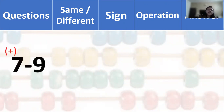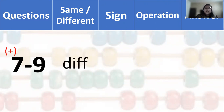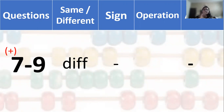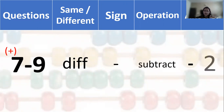Next question: 7 minus 9. 7 is positive, that means it is plus. Different sign. Different sign — the operation is difference. 7 and 9 — 9 is greater, so 9 minus 7. The sign of the greater number is minus. So the answer is minus 2. Repeat the rules each time — repeating is very important.